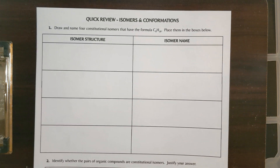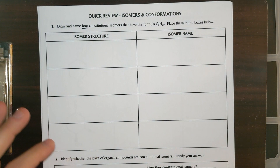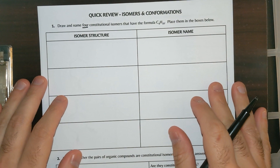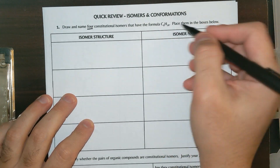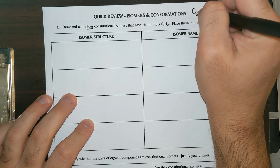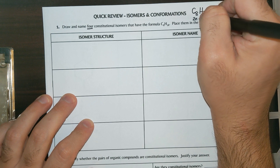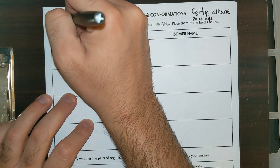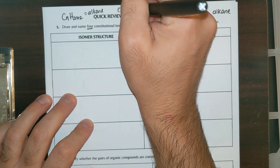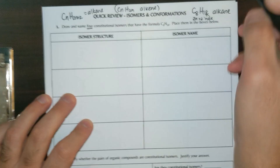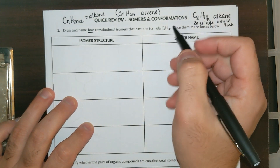Question number one is a sample question very similar to what you're getting. It says draw and name four constitutional isomers with the formula C8H18 — I'm not asking you to draw all of them, just four. The easiest one to draw is a straight chain of eight carbons. C8H18 is definitely an alkane — how do I know? It follows the 2n+2 rule: CnH2n+2 means alkane, and CnH2n would be alkene.